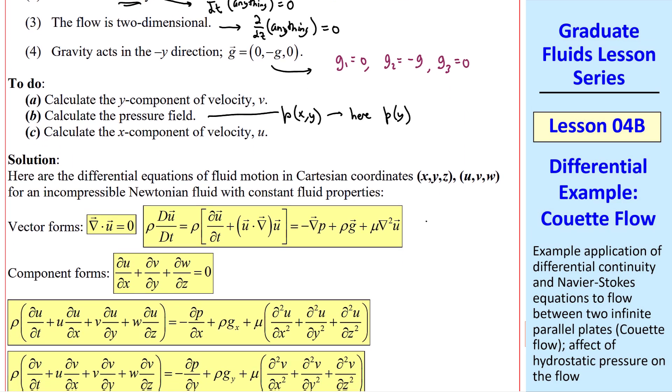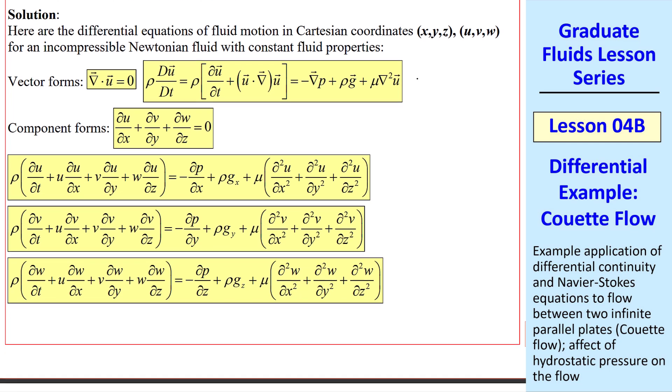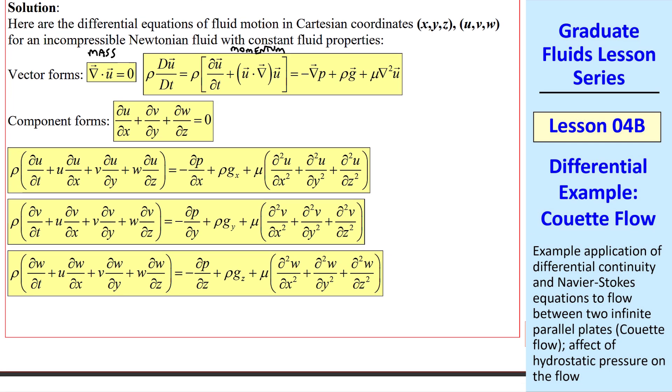I copied our differential equations of motion from a previous lesson, namely mass and momentum. This is in vector form, but I want you to get used to using the tensor notation form of these equations. Either way, in Cartesian coordinates, these three terms sum to zero.